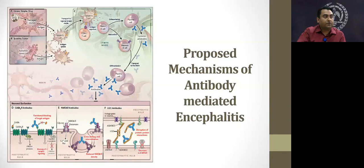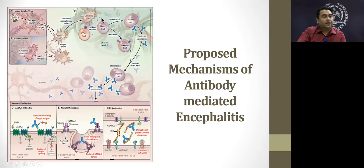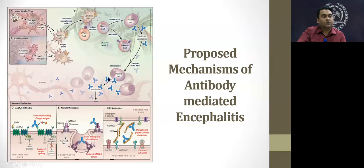In the synaptic cell-surface antibody encephalitis, the proposed mechanism begins with a prior viral infection or systemic tumor causing cell destruction and releasing antigens. These antigens are presented to antigen-presenting cells like dendritic cells, taken up into regional lymph nodes, where naive B cells along with CD4 T cells are activated. This causes B cell maturation and differentiation into plasma cells, which release antibodies. A memory B cell also enters the blood-brain barrier, differentiates into plasma cells, and secretes antibodies within the brain or CSF.